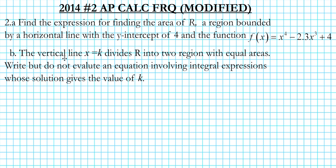In Part B, we are to find the vertical line x = k that divides R into two regions with equal areas. Write but do not evaluate an equation involving integral expressions whose solution gives the value of k.